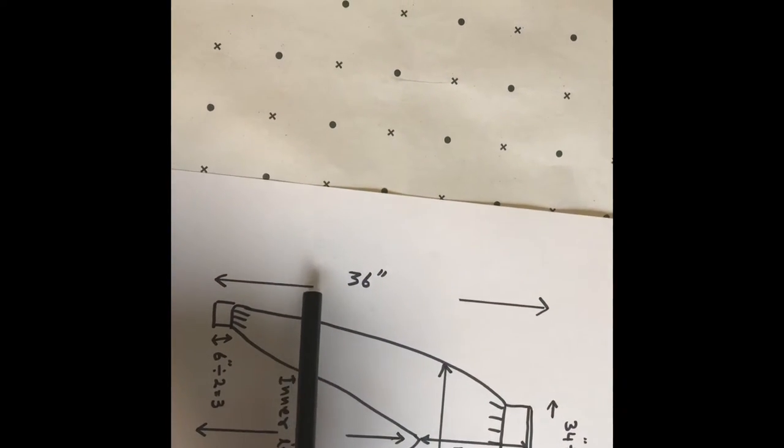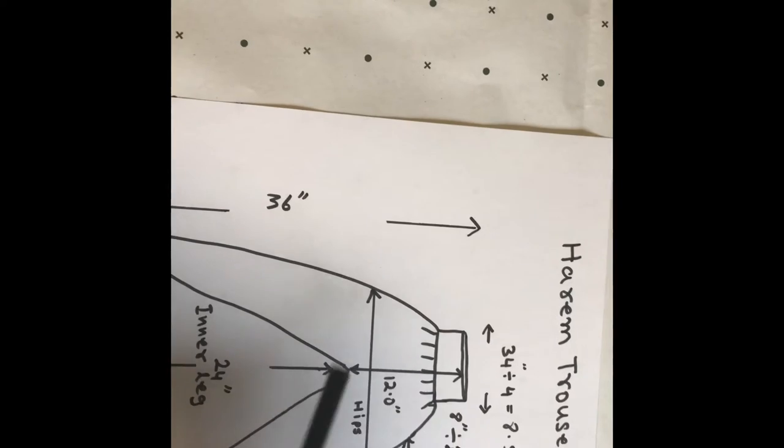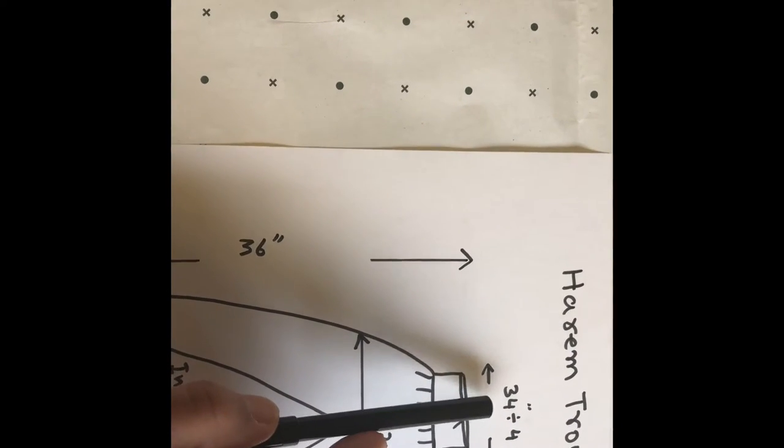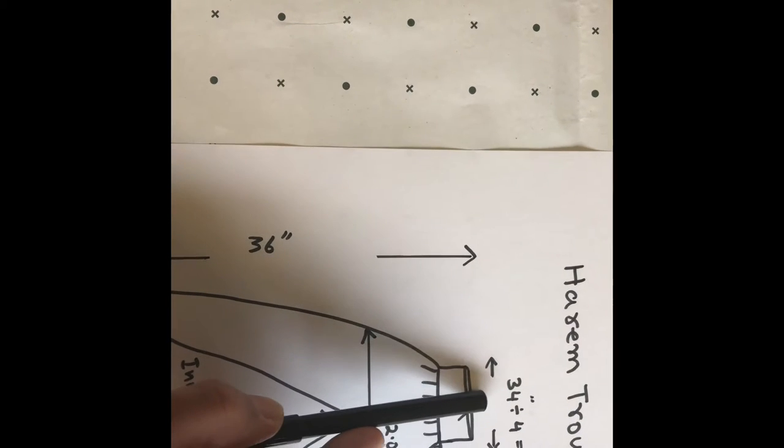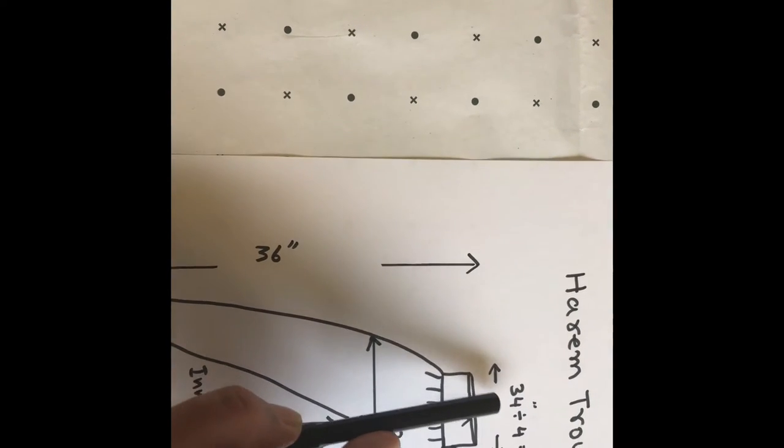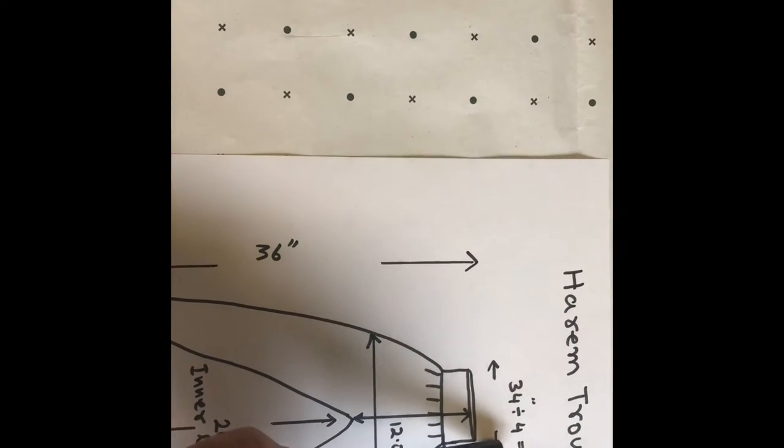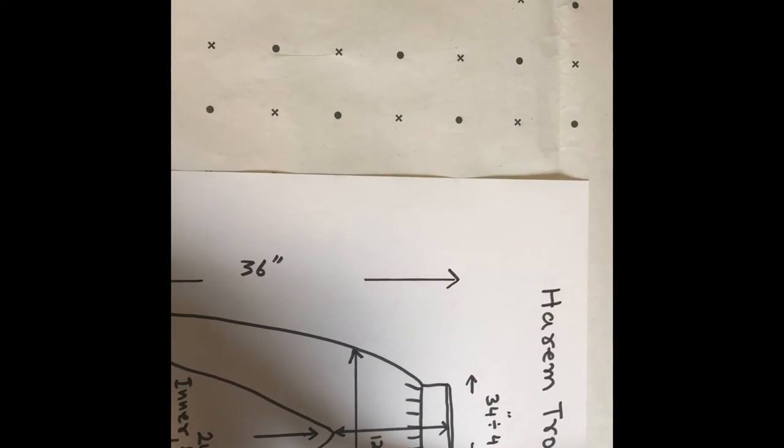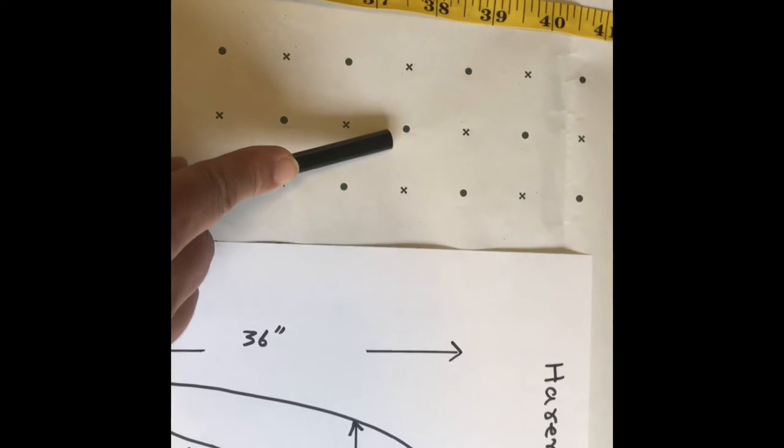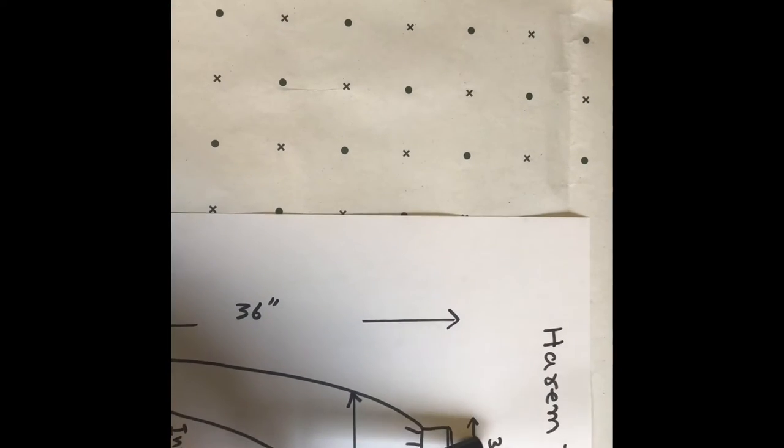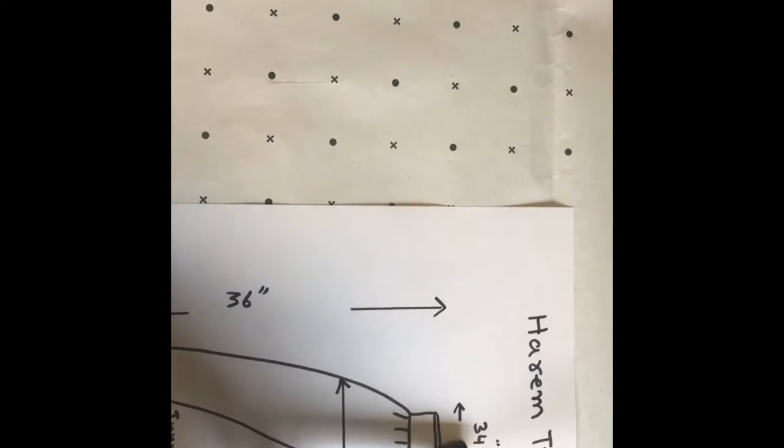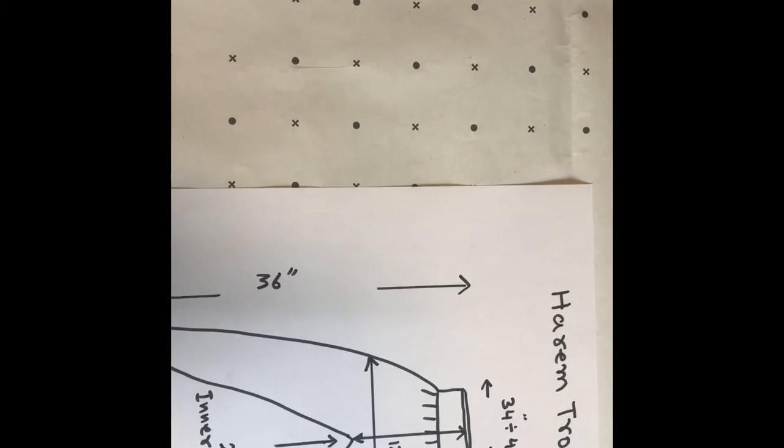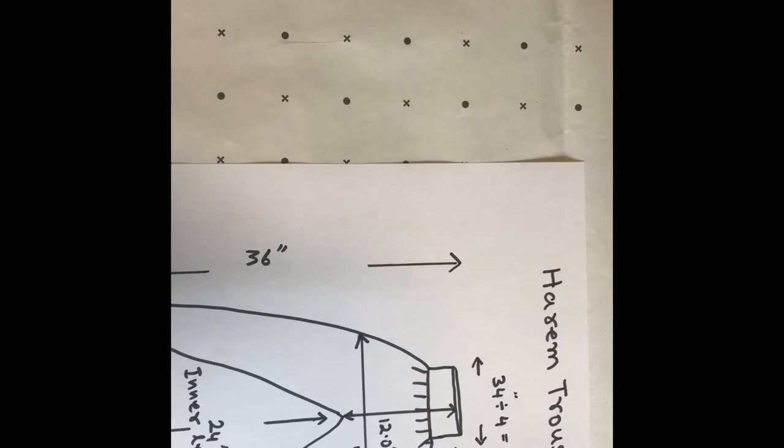Now we will start by taking the total length of our trouser required. I want 36 inches. The next step, we will measure our waist. My waist is 34 inches, and divided by 4 is equal to 8.5 inches. 8.5 inches is the measurement I will take on this piece of paper.